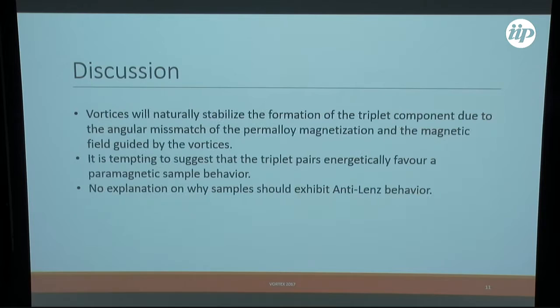We can now ask, what if there is a connection to the triplet formation? Because triplet formation is something that is often found in samples which are somehow similar. If we have vortices in the sample, then of course the vortices are not all aligned in the same direction as the ferromagnet is magnetized. Instead, you will have, due to the pinning centers, a bit of an angular mismatch, and this is actually what can create a stronger triplet component. So it might actually be that this is somehow related. However, this doesn't explain, or at least I don't see it, the anti-Lenz behavior.